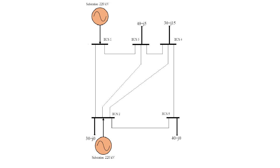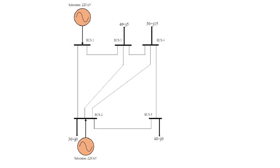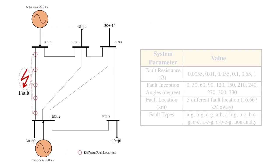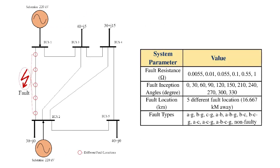We have deployed this 1D CNN to identify transmission line faults in a 5-bus system. For this, we selected an IEEE 5-bus system and introduced 10 different transmission line faults, including the healthy condition, in a specific transmission line between Bus 1 and Bus 2, with the shown fault parameters, and simulated in MATLAB to generate training data.